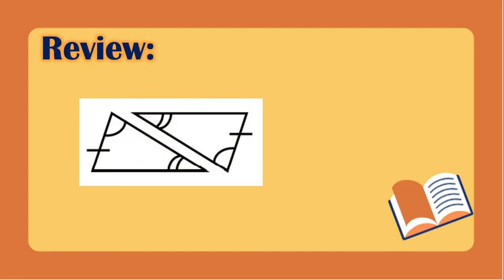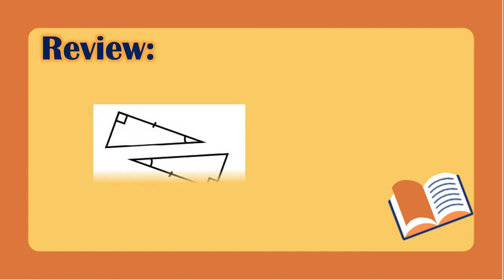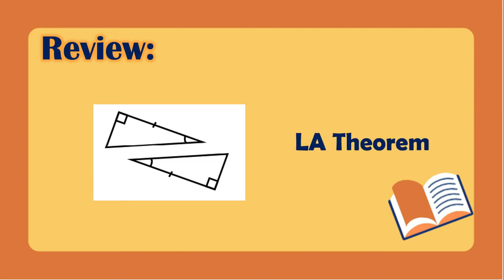Another example has all the information complete — we already have two angles and a side, and the side is a non-included side. So these triangles are congruent because of the AAS theorem. How about this one? This is another example of right triangles. We have the leg and acute angles, so these triangles are congruent because of the leg-angle theorem, or LA theorem.